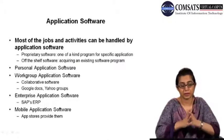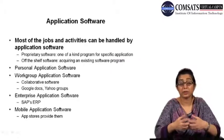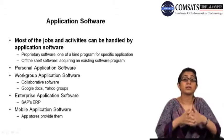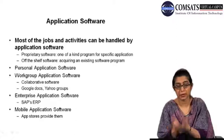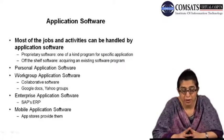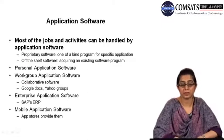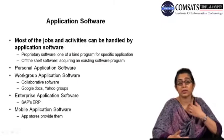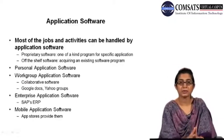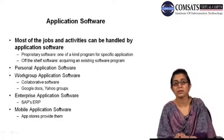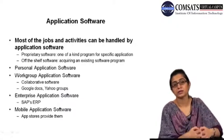We can categorize application software in different ways. The first categorization comes from how you are using or acquiring the software — either you are creating the application software yourself, or you are getting application software that already exists. There is one type called proprietary software, which is a program built for a specific application, either built by the organization themselves. Off-the-shelf software means the organization is acquiring an existing software program. Proprietary means it is private and exclusively owned by that certain organization.